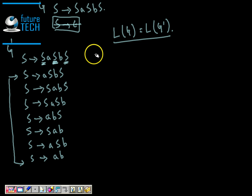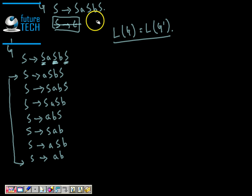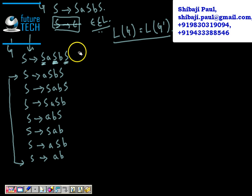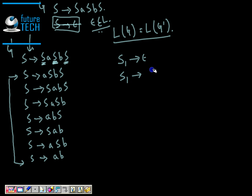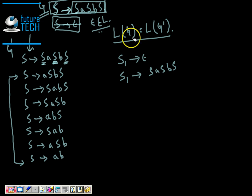There is one more case to consider: if the language itself contains ε. Since the start symbol derives ε, ε is an element of the language. But in G', ε is not derivable from the start symbol, so it is not in the language. If ε is part of the language, we introduce a new start symbol S1, add the rule S1 → ε, and also add S1 → SaSbS along with all the other new rules.